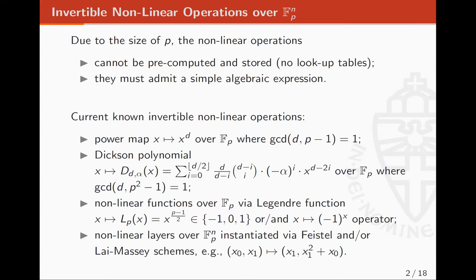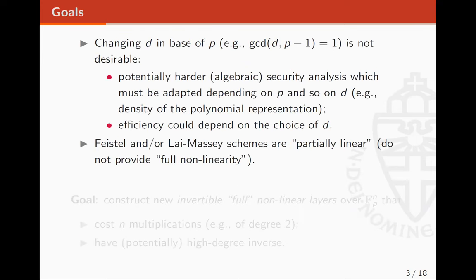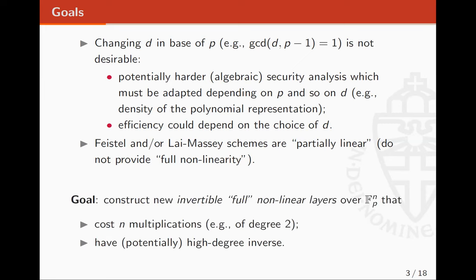Focusing on power maps and Dixon polynomials, there could be a problem in practice: in these applications we use several primes, so we have to change the exponent based on the prime. This means changing the security analysis — for example, the growth degree or density of the polynomial representation can change depending on the exponent. Also, these primitives could be efficient for some exponents but not others. For FISAL and Lai-Massey schemes, they are partially linear in the sense that some outputs are linear functions of the input, which is also not ideal. The goal of this paper was to look for new invertible nonlinear layers over FP to the N of degree two with high-degree inverse, to prevent meet-in-the-middle algebraic attacks.